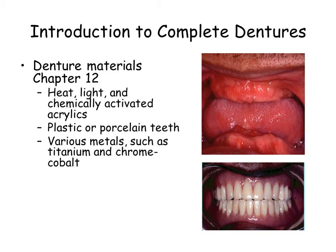The dentist should possess sufficient knowledge of materials used in prosthodontics so that they can exercise prudent judgment in their selection. Typically, complete denture prosthodontics uses a number of heat, light, and chemically activated acrylics. Plastic or porcelain teeth may be used. On occasion, various metals such as titanium and chrome cobalt may be employed.